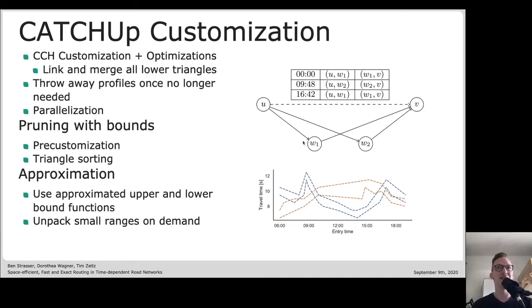The basic scheme remains the same but to get practical performance we need to do a bunch of optimizations. The first thing that we note is to compute those tables we actually do need travel time functions, but we can throw away those profiles once we no longer need them. So once all outgoing arcs of UV going to higher rank nodes have been processed, we know that we won't need any more of the profiles at arcs going downward to lower rank nodes and we can throw away those profiles.